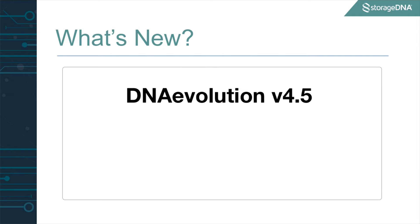With Evolution version 4.5, we have introduced numerous new enhancements. One of the key focuses is our automation engine. As our customers are receiving more and more content, the reliable protection of this data to LTO tape has become a huge priority. Evolution 4.5 can automatically scan your near-line storage or your SAN, incrementally backing up content to LTO tape. As your LTO tapes fill up, Evolution can automatically verify these tapes and even goes and fixes verification errors if it encounters them.